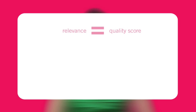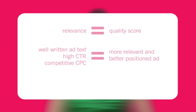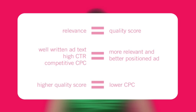Keyword relevancy refers to the likelihood that a Google user searching on a keyword is interested in the advertiser's product or service. If your keyword is highly relevant to your ad, you'll likely receive more clicks on that ad. The relevance of a keyword is measured by its quality score on Google. Having well-written ad text, a high CTR, and a competitive cost per click result in a more relevant and better positioned ad. Remember that the higher your keyword's quality score, the lower the cost you pay when someone clicks on your ad.